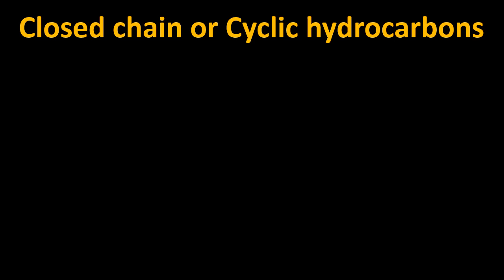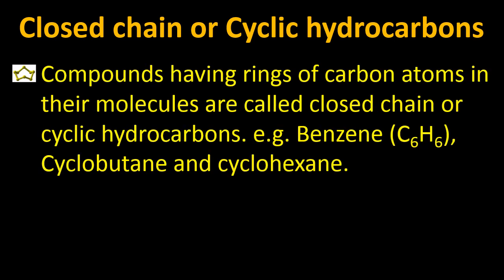Now let's move to closed chain or cyclic hydrocarbons. In all previous sections we learned about straight chain, branched chain, and open chain hydrocarbons. Closed chain hydrocarbons are compounds having rings of carbon atoms in their molecules. For example, benzene, cyclobutane, and cyclohexane. The first carbon is directly attached to the last carbon to form a ring.